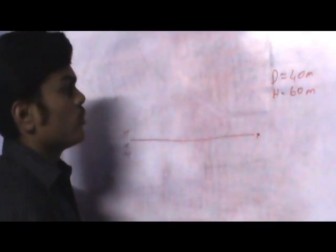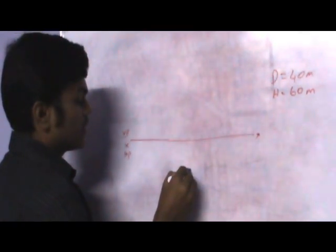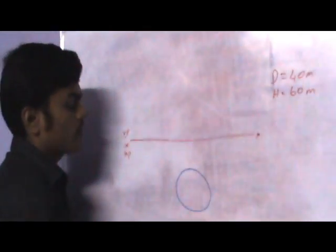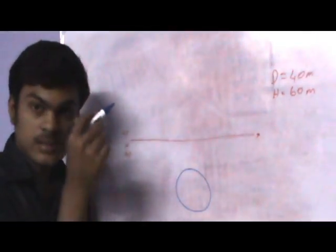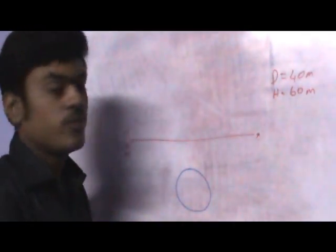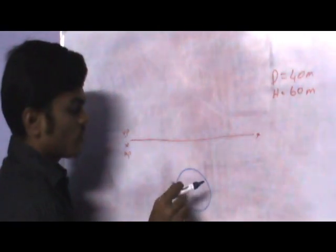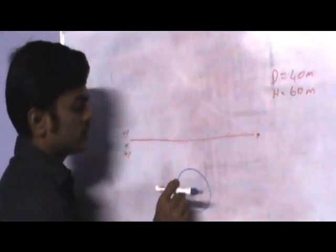I am going to draw a circle of radius 20 mm. How I got 20 mm is — they have given the diameter, so if you divide the diameter by 2, you will get the radius. Take 20 mm in your compass and draw the circle.